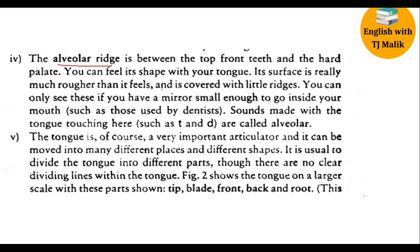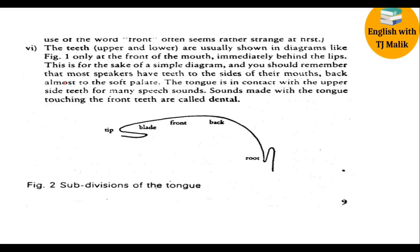The fifth articulator is the tongue, and it is divided into various parts. The tongue is of course a very important articulator — it can be moved into many different places and take different shapes. When we are saying certain words, we are touching and moving our tongue within the oral cavity. There are no clear dividing lines within the tongue. The parts are: tip, blade, front, back, and root — so there are five subdivisions of the tongue.